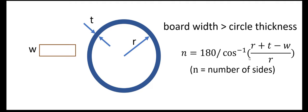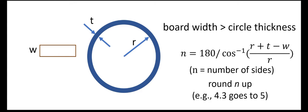Given that board width and given the radius and the thickness of the circle, the first thing you do is calculate the number of sides of the polygon that you're going to create, whether it's a pentagon or a hexagon or whatever. And this is the formula. So it's 180 divided by the inverse cosine of this fraction: (r + t - w) / r. And this is written out to be in degrees. And that's going to give you some number of the number of sides you need.